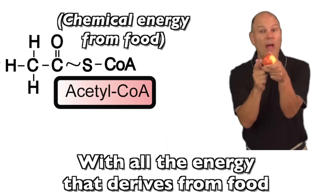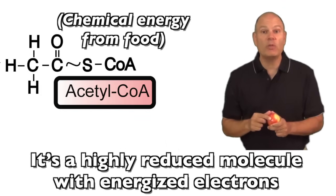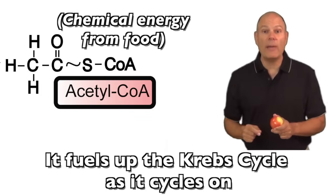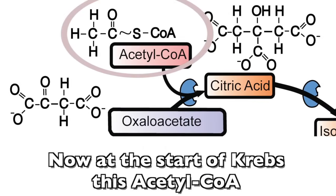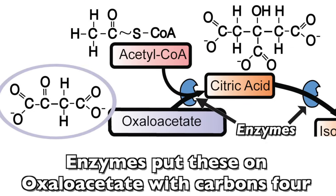Acetyl-CoA carries carbons too, with all the energy that derives from food. It's a highly reduced molecule with energized electrons that fuels up the Krebs cycle as it cycles on. Now at the start of Krebs, this acetyl-CoA has the two carbons it carries in, ripped away.